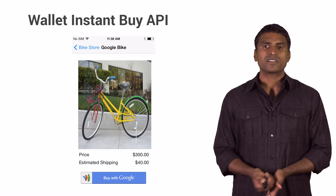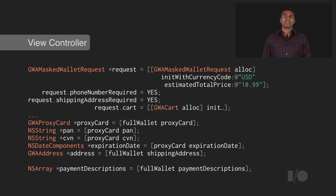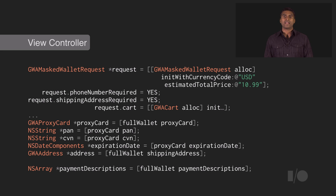The two key parts in the sample code here are the masked wallet request, which defines all the fields that you need in order to create an order. And the second part talks about how, once the order is authorized, you can get the proxy card to send the payment information to your processor.